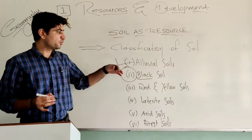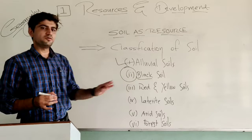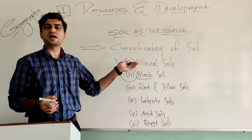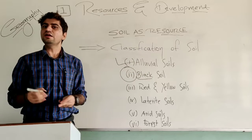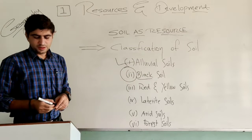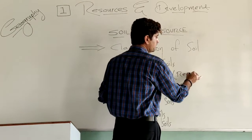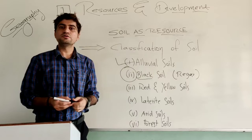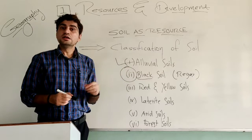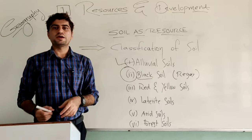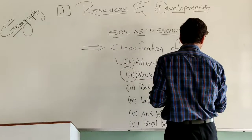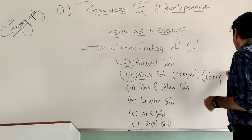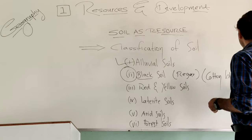Black soil. Let us see some of the important features and information about black soil. It is black in color — that is obvious, so you can count it as a feature. It is also known as Regur soil. Another name of black soil is Regur soil. One more feature about black soil is it is also known as cotton black soil. Why? Because it is most suitable — ideal — for growing cotton.